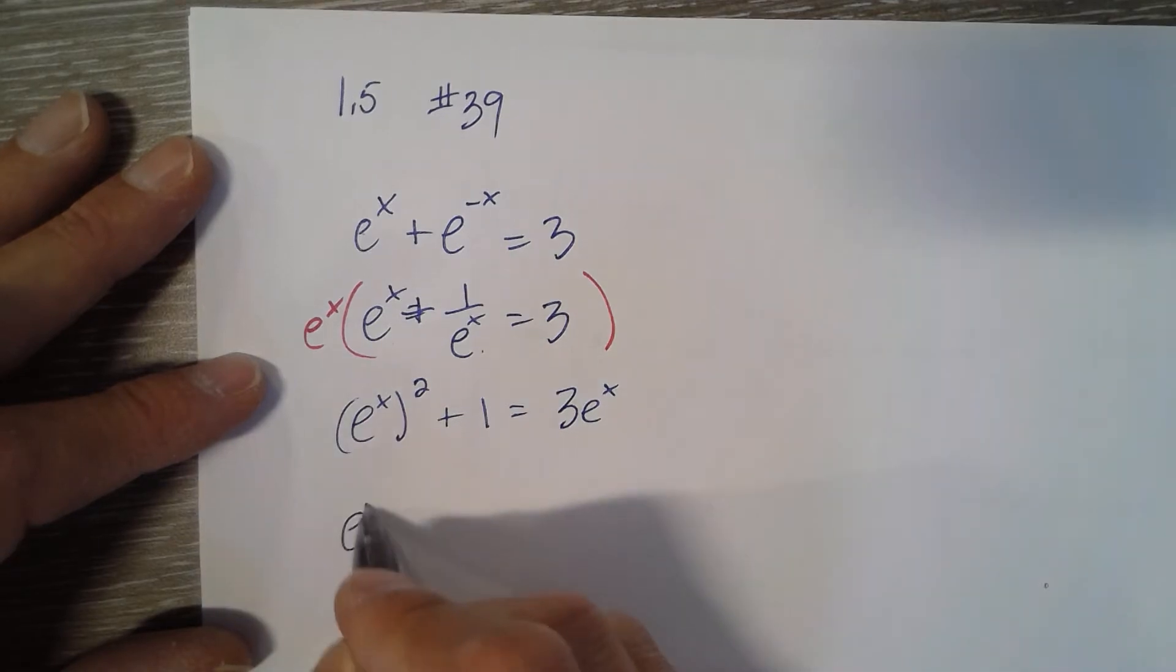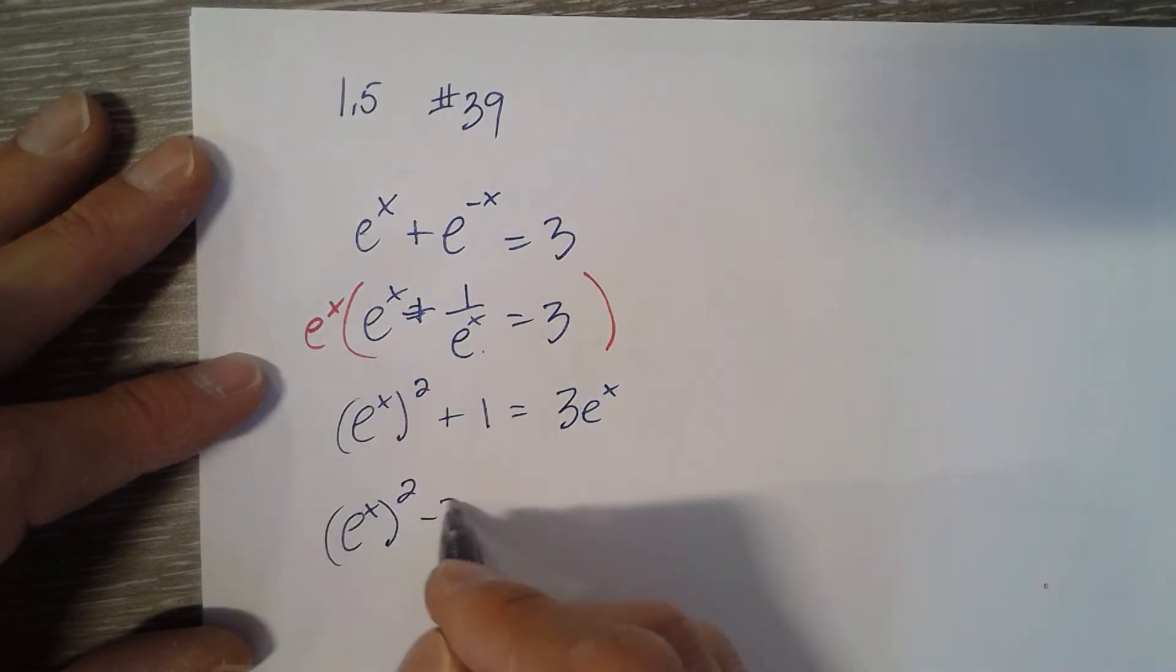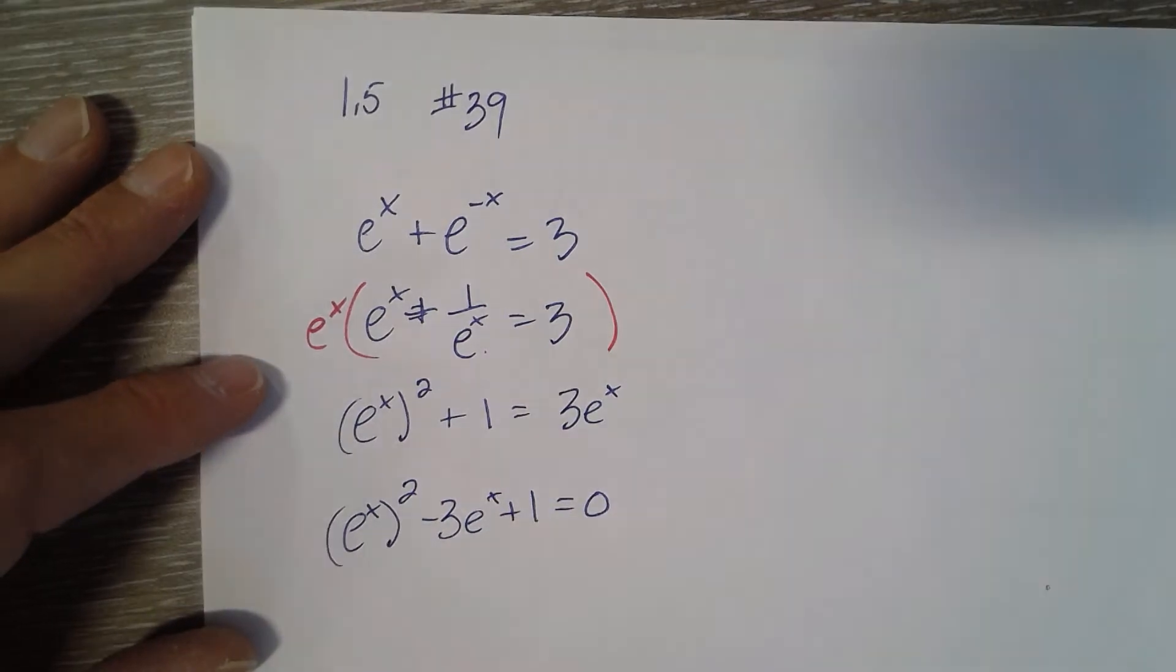Okay, now I'm going to move everything to one side. So I have 0 on one side. And now what?